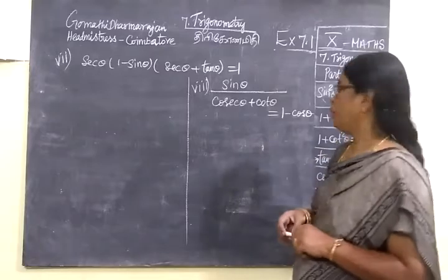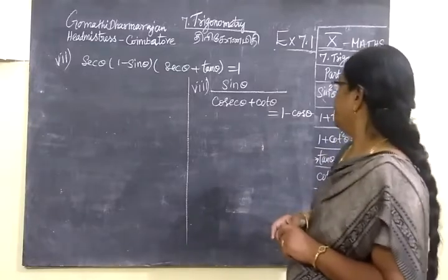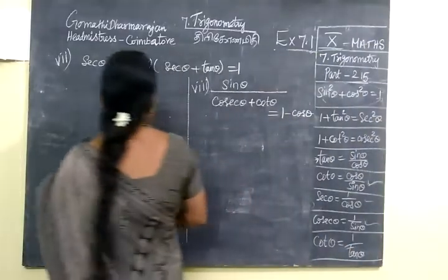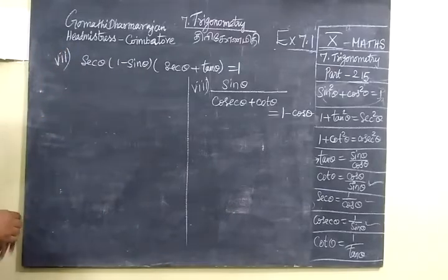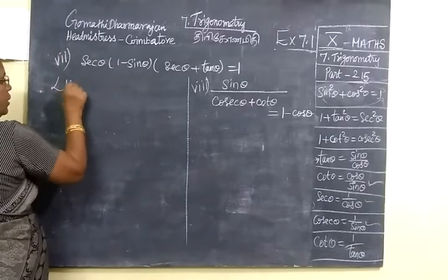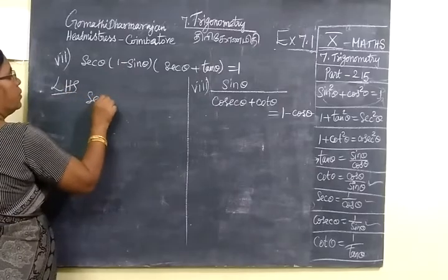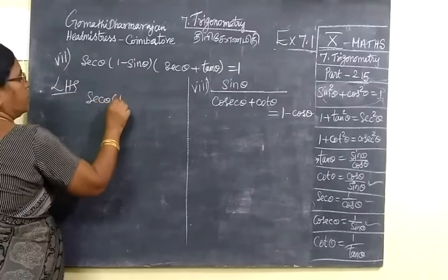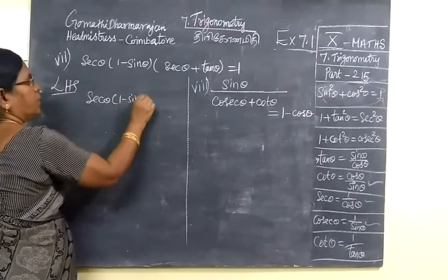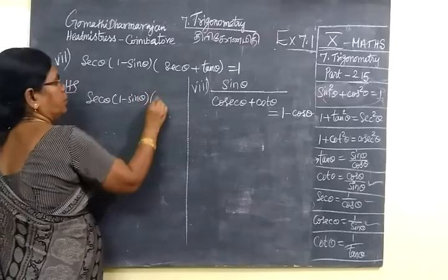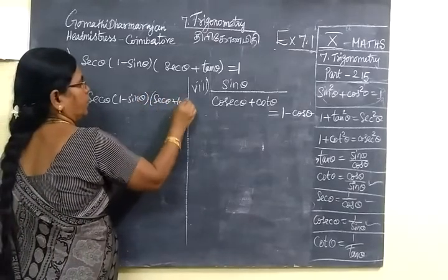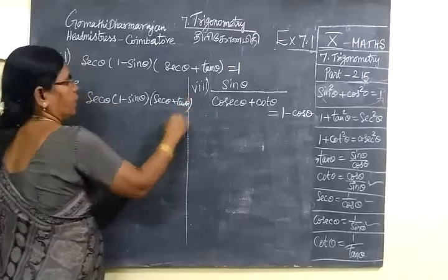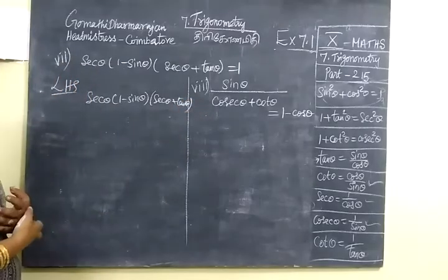Now we see part 215. We need to prove that sec θ (1 - sin θ)(sec θ + tan θ) equals 1. Consider the left-hand side: sec θ (1 - sin θ), then multiplied by (sec θ + tan θ). All of this equals 1.